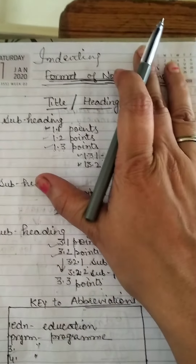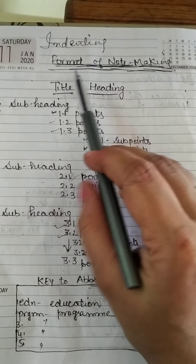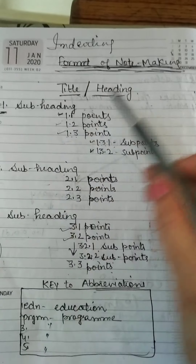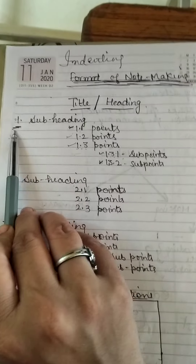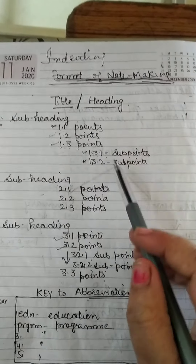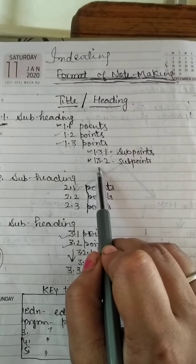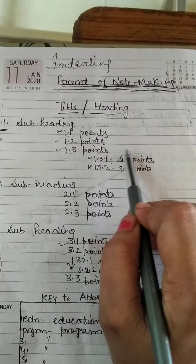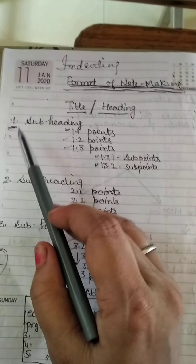For example, if the passage is about global warming, then the title will be 'Global Warming.' Subheadings will be 'Causes,' then write points under causes: 1.1, 1.2, 1.3. If writing subpoints under a point, write 1.3.1, 1.3.2, or 1.2.1 in this way. You have to make notes with this numbering structure.